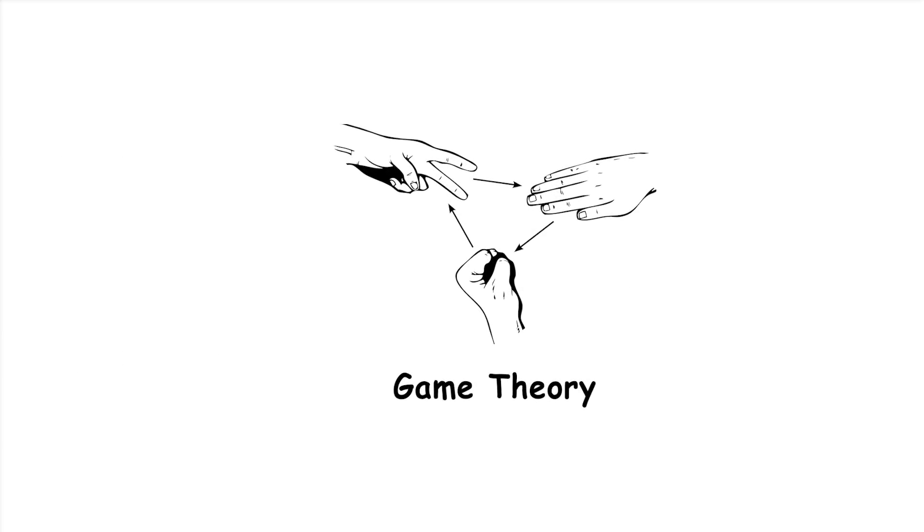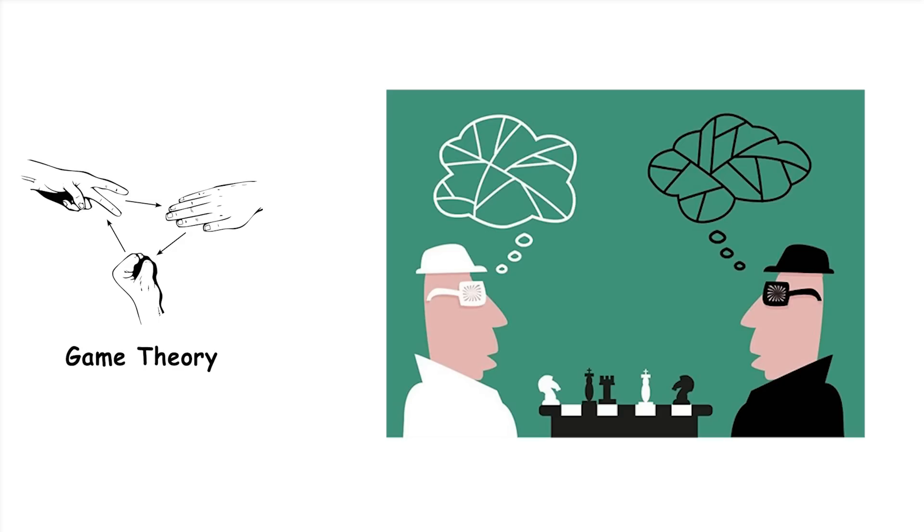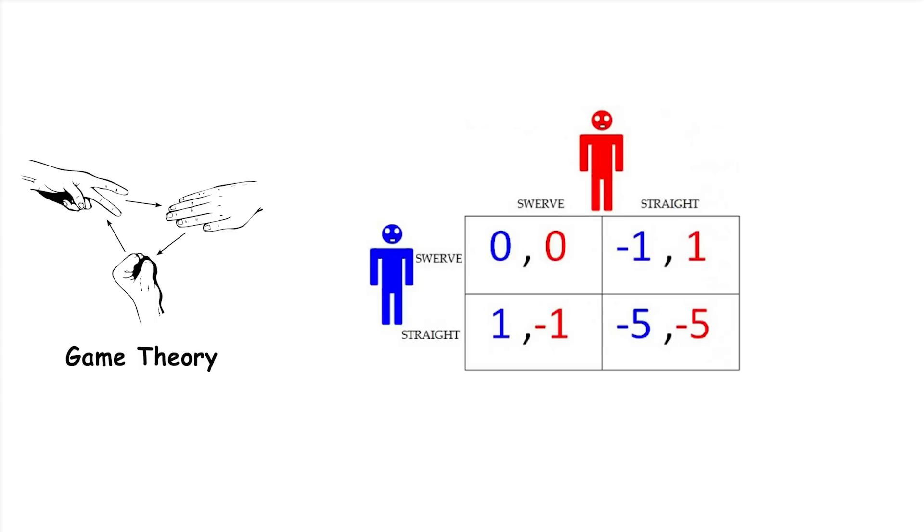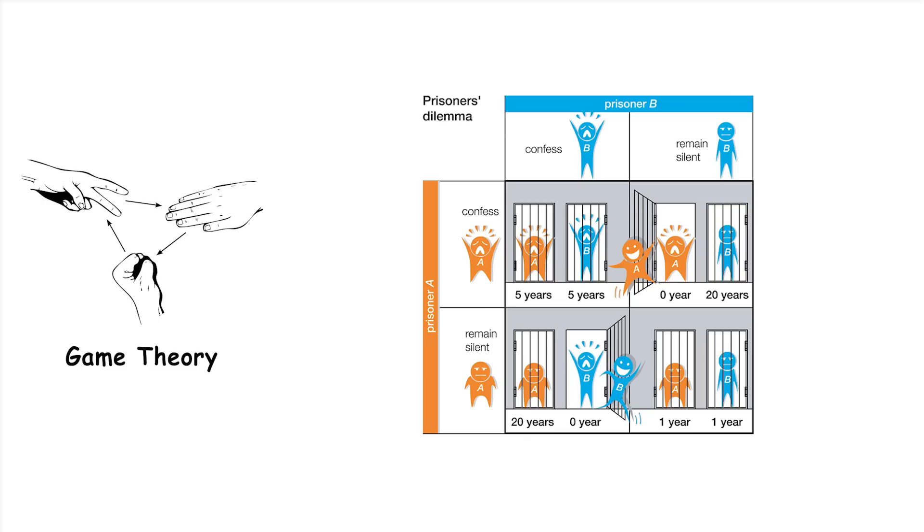Game theory. Game theory studies situations where individuals, players, make decisions that affect each other. It helps predict what choices players will make by analyzing their strategies and possible outcomes. One famous concept is the Nash equilibrium, where no player can benefit by changing their strategy if others keep theirs unchanged.